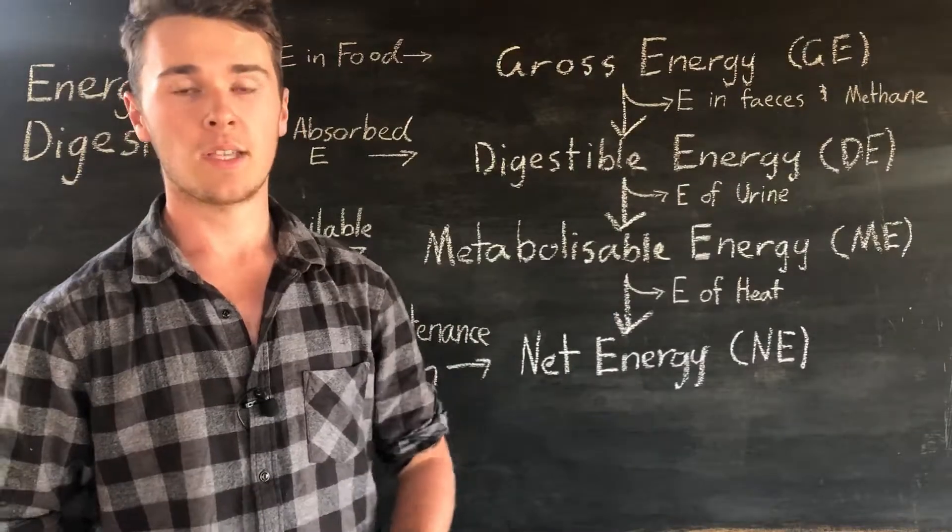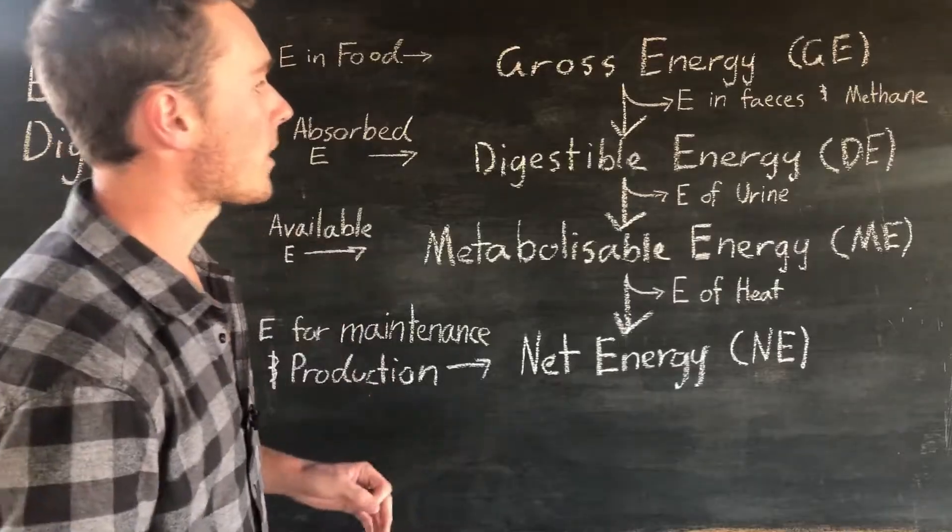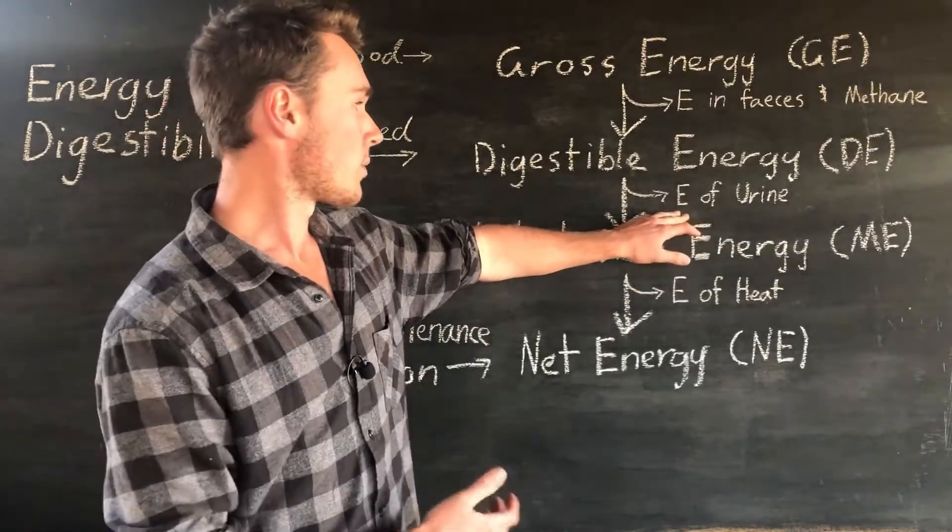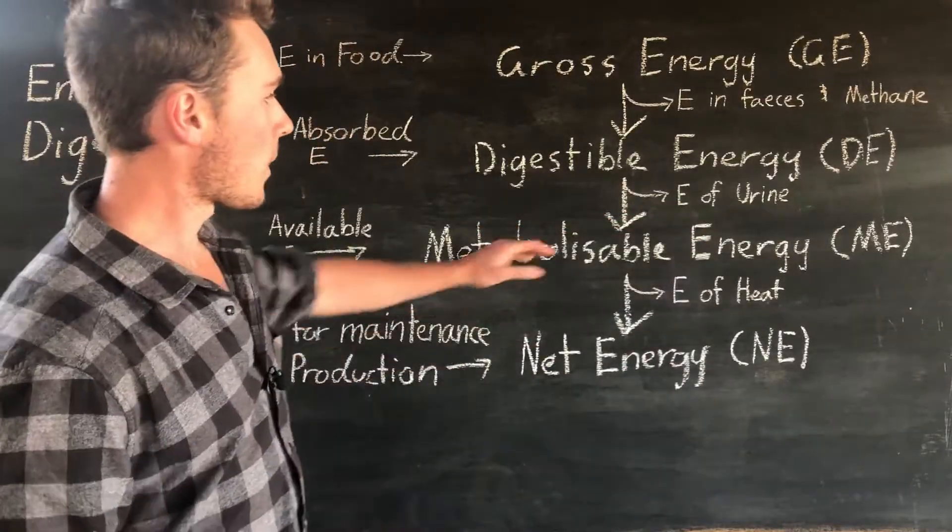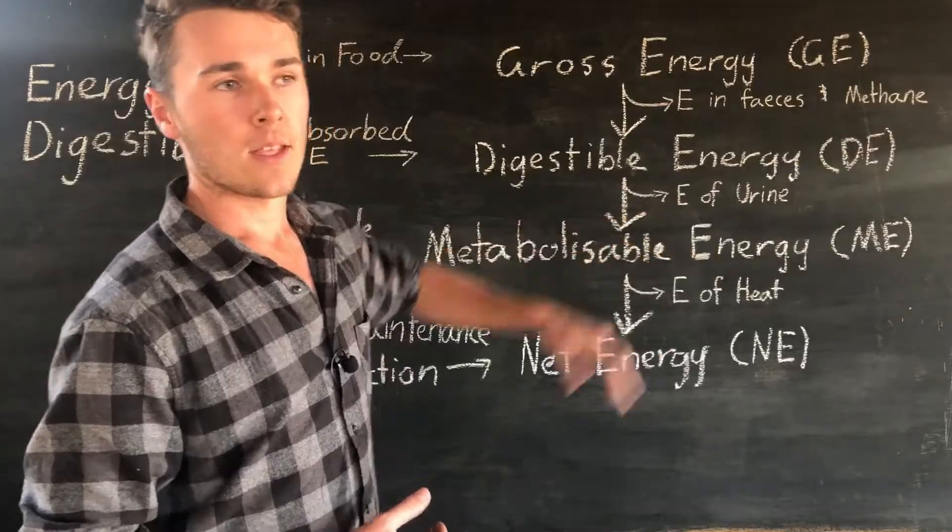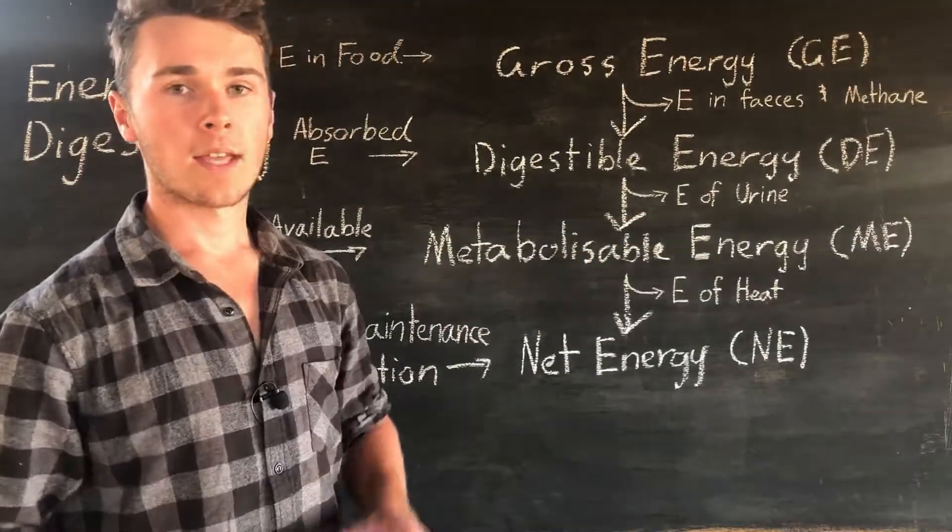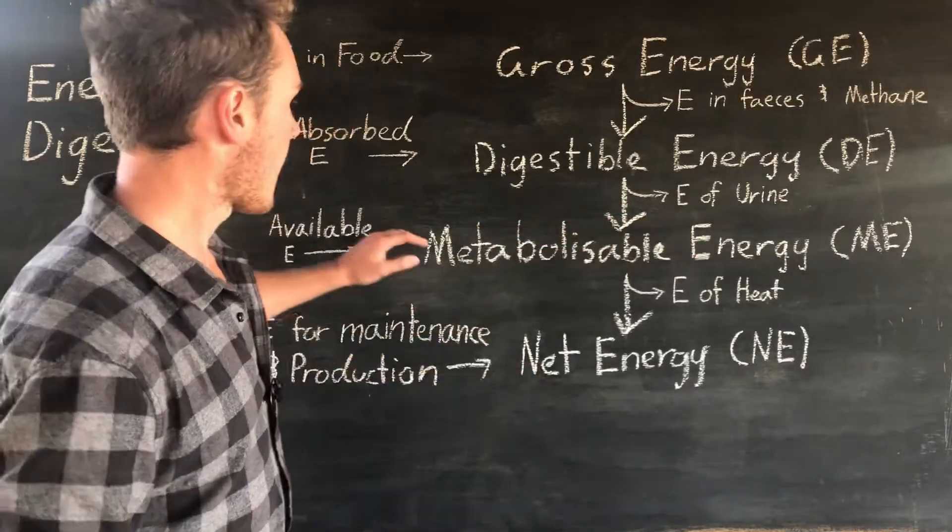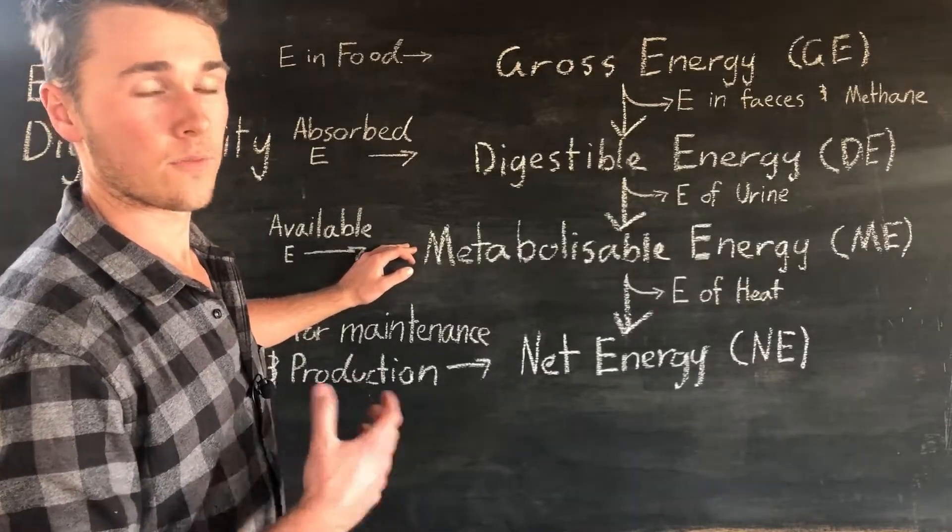So now we have digestible energy, and so from here we get our metabolic reactions. But as part of our metabolic reactions, we also get waste products. So a lot of this waste product is actually removed in our animals' urine. So there's still energy in this, and so that's why we get a loss of energy when urine is removed. And so it's this energy after the energy in urine is removed that we can actually use for functions.